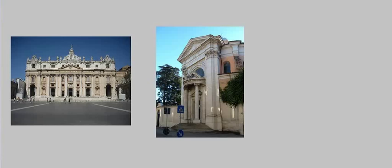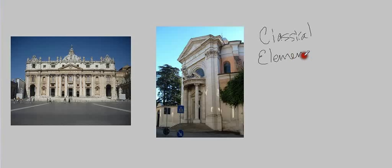You can still see an interest in classical elements in these buildings — that has not gone away. We see columns, capitals, cornices, and pediments — it's all still here. But it's used in a different way; this isn't the typical application of those elements, and we'll discuss this more in coming lectures.